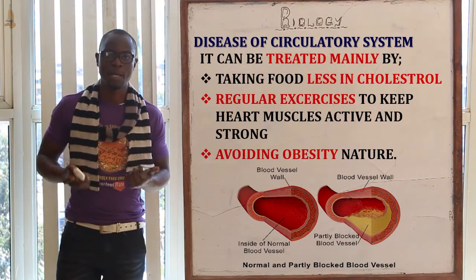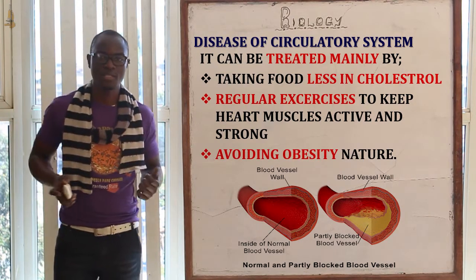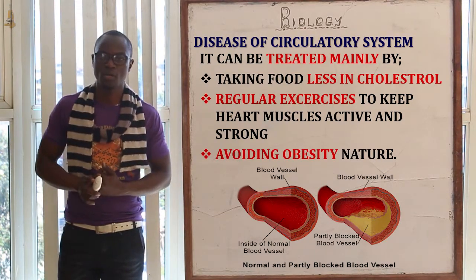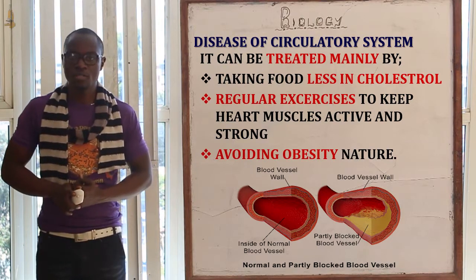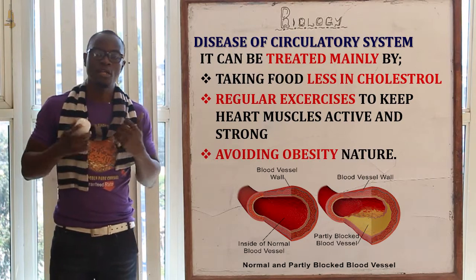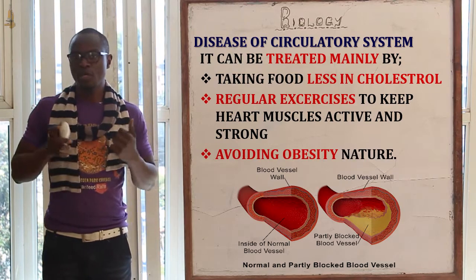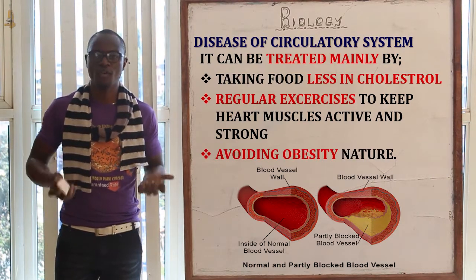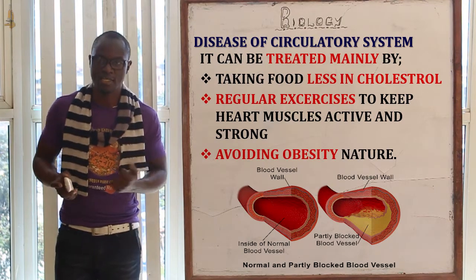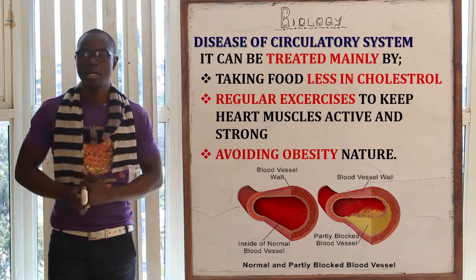Arteriosclerosis can be prevented or treated in different ways. The first is taking food which is low in cholesterol. It may also be prevented by regular exercise in order to keep the heart muscles active and very strong. Another preventive measure is to avoid obesity, as it is associated with different circulatory system diseases.